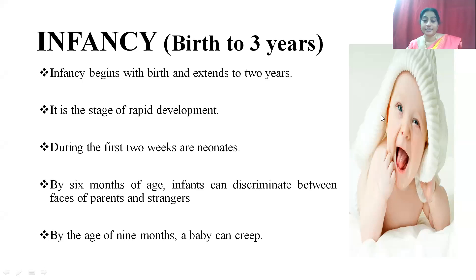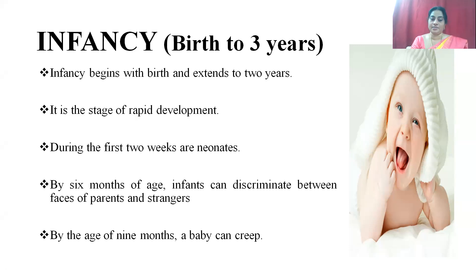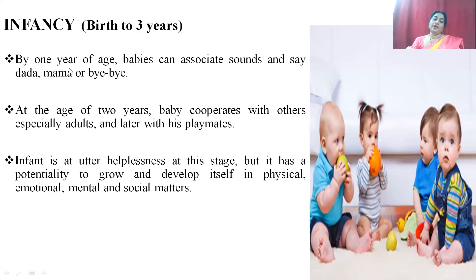Late childhood is the second part, covering six to twelve years. Children need and count on the friendly care and backing of their parents, while making attempts to manage their own affairs. This period includes slow and steady growth, developing independence, emotional stability, developing social tendencies, a realistic attitude, and intellectual development. Coming to the adolescence stage, from 12 to 19 years, the word adolescence is derived from the Latin word adolescere, which means to grow or to grow to maturity. According to Elizabeth Hurlock (1981), adolescence begins when a child becomes sexually mature and ends when they reach the age of legal maturity.